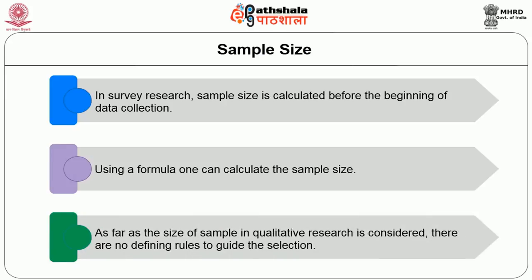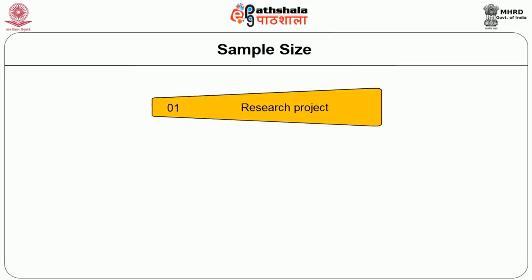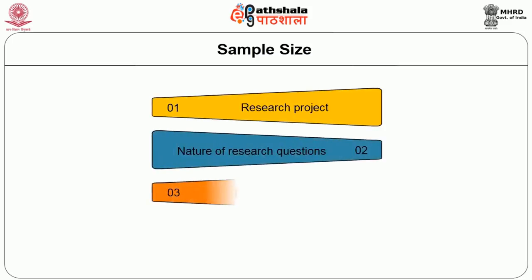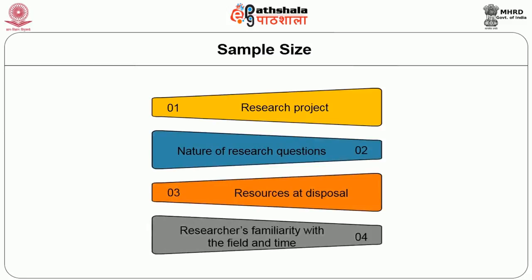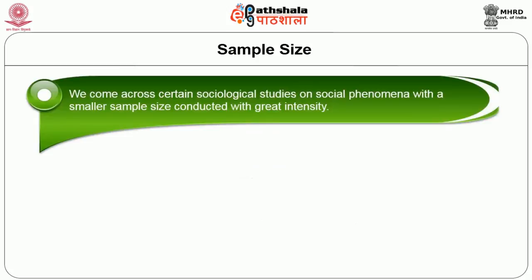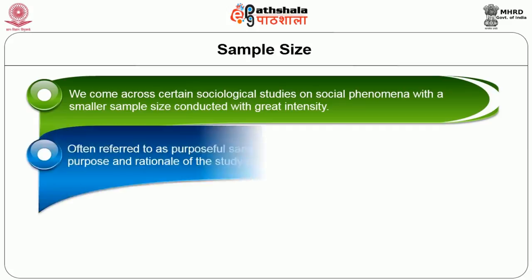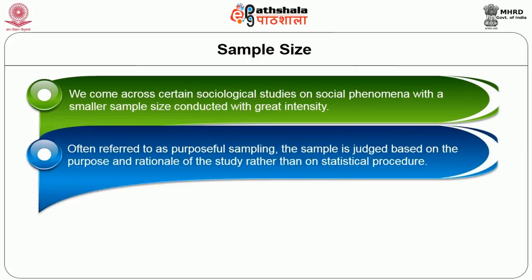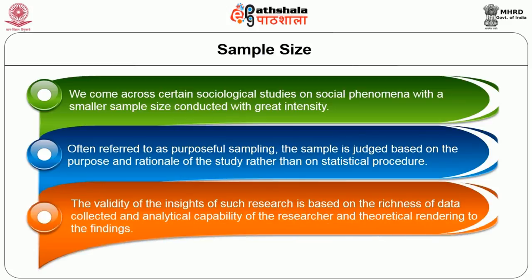As far as sample size and qualitative research are concerned, there are no defining rules to guide the selection. It depends on the objectives of the research project, the nature of research questions, resources at disposal, the researcher's familiarity with the field, and time. We come across sociological studies on social phenomena with a smaller sample size conducted with great intensity, often referred to as purposeful sampling, where the sample is judged based on the purpose and rationale of the study rather than on statistical procedure. The validity of such research is based on the richness of data collected and the analytical capability and theoretical rendering of the findings.